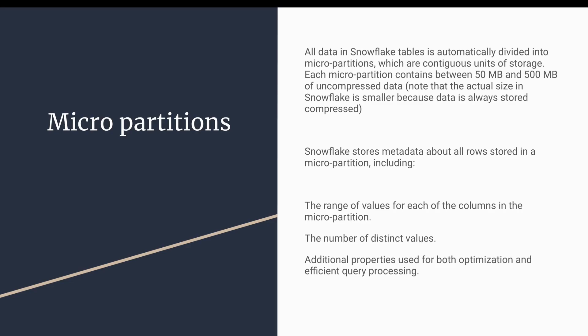All data in Snowflake tables is automatically divided into micro partitions, which are continuous units of storage. Each micro partition contains between 50 MB and 500 MB of uncompressed data. In practice, Snowflake always stores data in a compressed manner, so actual size is always less than that. Snowflake also stores metadata about all rows in a micro partition — including the range of values for each column, the number of distinct values, and additional properties used for optimization and efficient query processing.